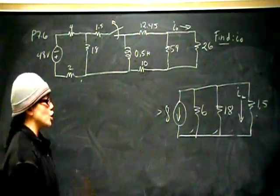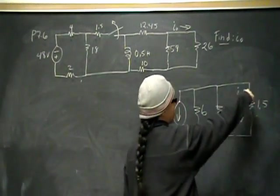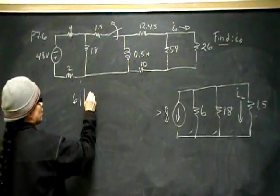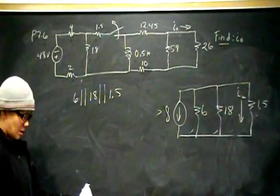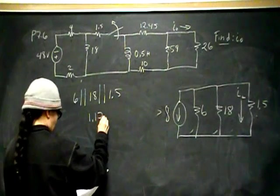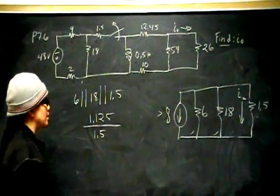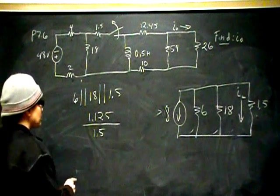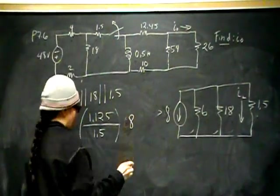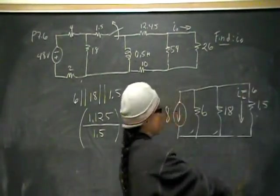It's going to be a ratio of the equivalent resistance over the branch that you're looking for. So I'm going to take the equivalent resistance and divide that by the branch that I'm looking for, which is the 1.5 branch. So 6 in parallel with 18 in parallel with 1.5. And then the branch I'm interested in is the 1.5 branch. That's the branch that is the inductor. So you multiply that by 8.